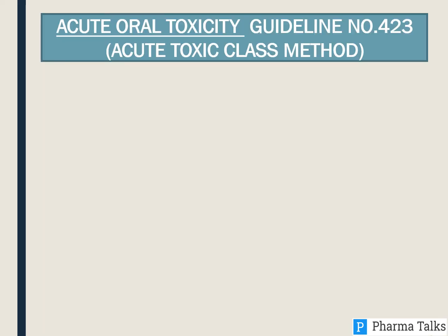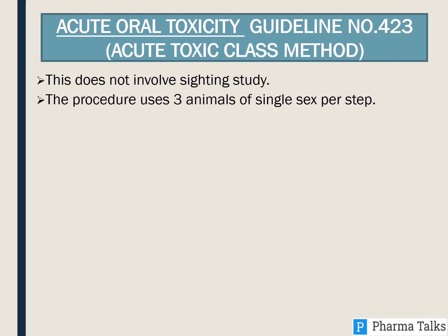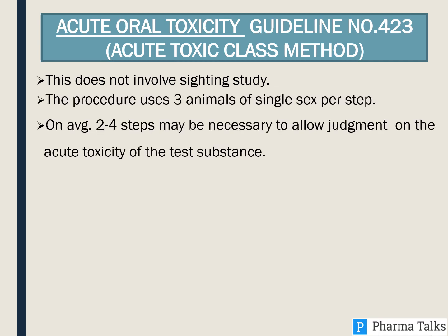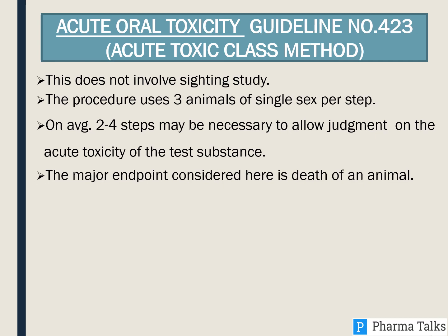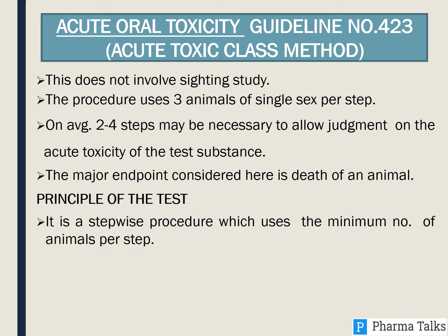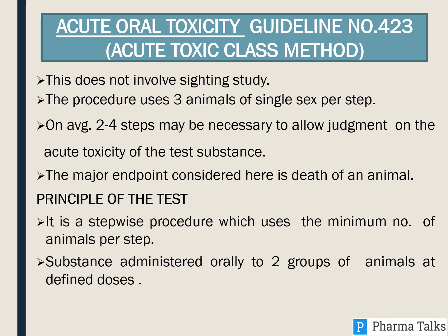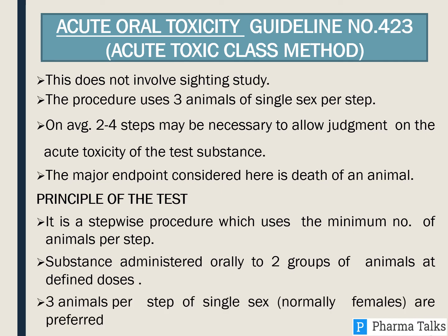Acute Oral Toxicity Guideline 423 — Acute Toxic Class Method. This does not involve a sighting study. The procedure uses three animals of a single sex per step. On average, two to four steps may be necessary to allow judgment on the acute toxicity of the test substance. The major endpoint considered here is death of an animal. It is a stepwise procedure which uses the minimum number of animals per step. The substance is administered orally, with three animals per step of a single sex — normally females are preferred.